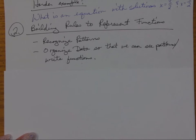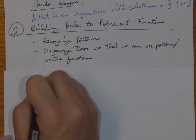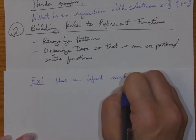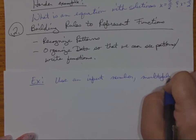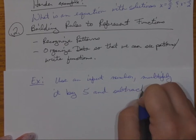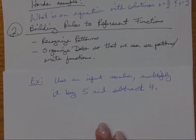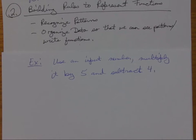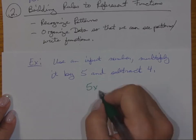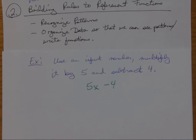Here's an example: take any input number, multiply it by five, and subtract four. I basically just wrote the rule in words. One way to represent that pattern is to say: take my number and multiply it by five, giving 5x, then subtract four from the entire quantity, giving 5x - 4. That is my function.